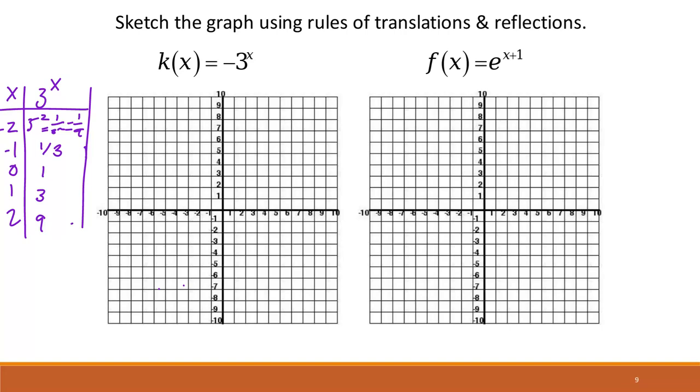Okay, so then if we use translations there to help us, the translation that we're looking at is a reflection, right? So if it's negative 3 of x.